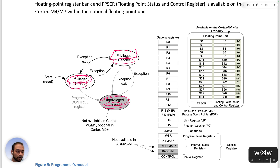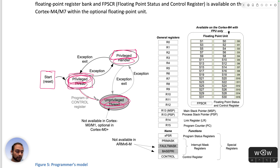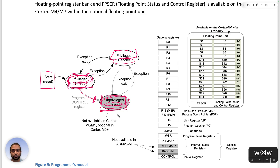When the CPU starts — when the M-Class CPU has booted — it starts in the privileged thread mode, not handler mode. In this state, the code can reach out to the control register. If we set the privileged bit in the control register, we can push the CPU into thread mode but in an unprivileged state.